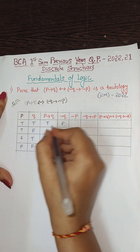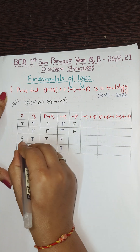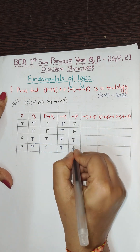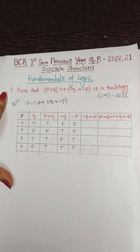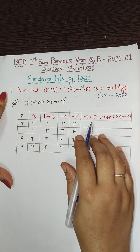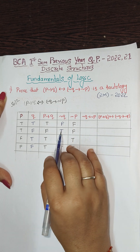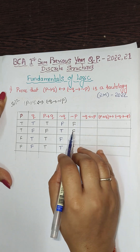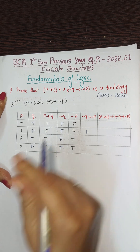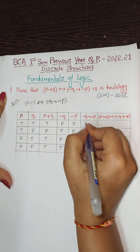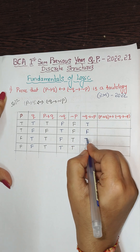Negation of p: reverse the truth value of p — if it is true write false, if false write true. So ¬p is: F, F, T, T. Now ¬q→¬p is a conditional statement — false only when the first proposition is T and the second is F. Checking the columns, we get: T, F, T, T — wait, let me clarify: tf gives false, rest are true.